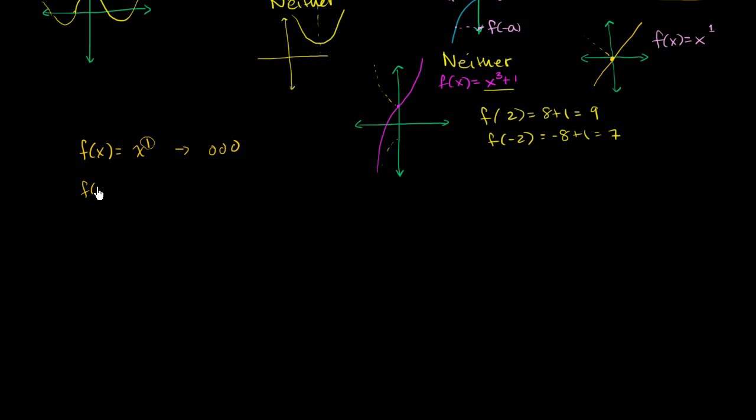If we have f of x equals x squared, we saw in the previous video this is even, and it gels with the idea that we're raising it to an even power. I could keep going - x to the third, that is odd.